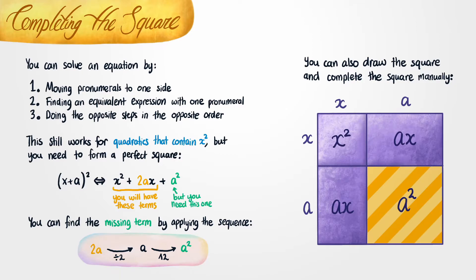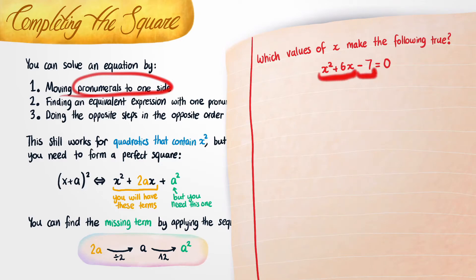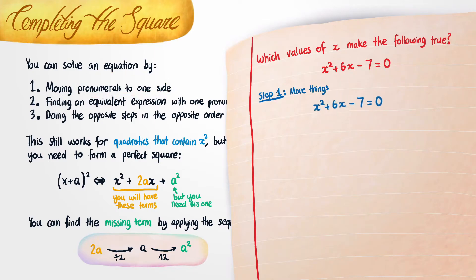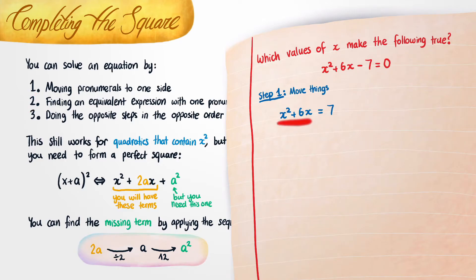But these steps wouldn't be worth very much if I didn't show you how to actually use them. So let's bring out an example and work through it together. We'd like to solve for the values of x that make the following expression true. The first thing to do is to actually move all of the pronumerals to one side. We're going to keep these two on the left-hand side, but we're going to move this minus 7 to the right-hand side. In order to move the 7 to the other side, this negative sign will just turn into a positive sign when we move it over. So now that we've moved everything to one side, we're ready for step 2, which is to find an expression with only one pronumeral. This looks exactly like our formula, where the 6 is the same thing as 2a. So we need to complete the square here to solve this expression.